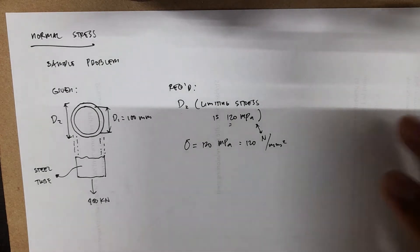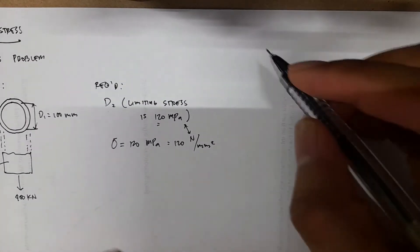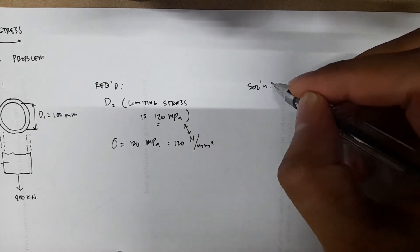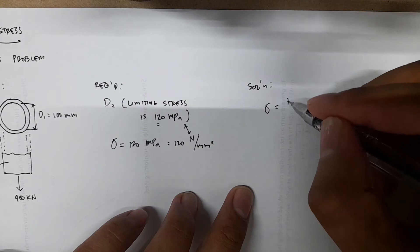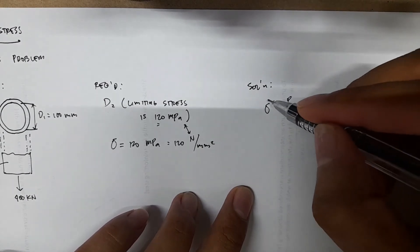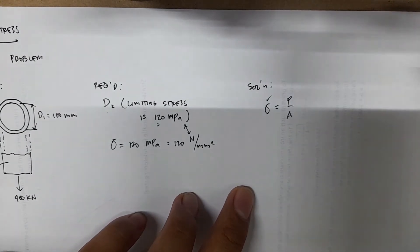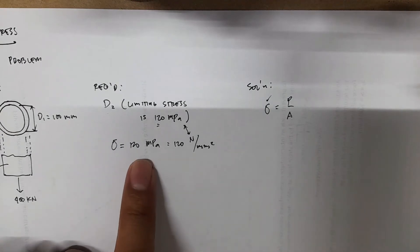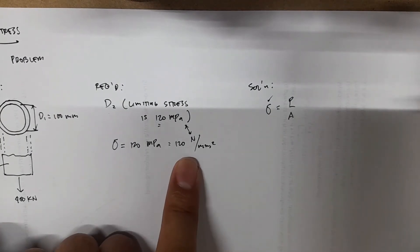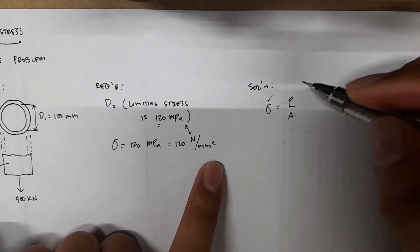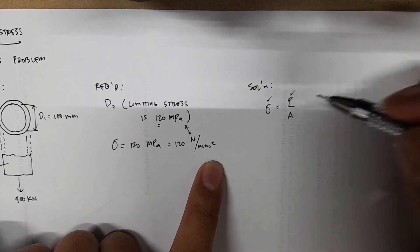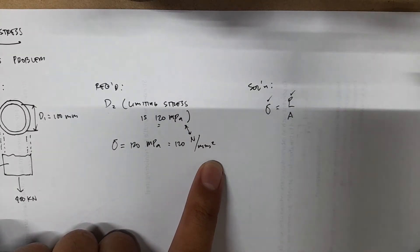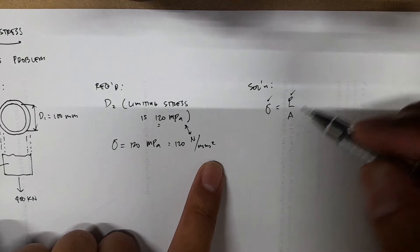For the solution, first, a working equation for normal stress is sigma S equals P over A. This is known, it's given 120 megapascals or 120 Newton per millimeter squared. This one can also be solved using equilibrium of forces in the y direction, and then this is where D2 can be solved.